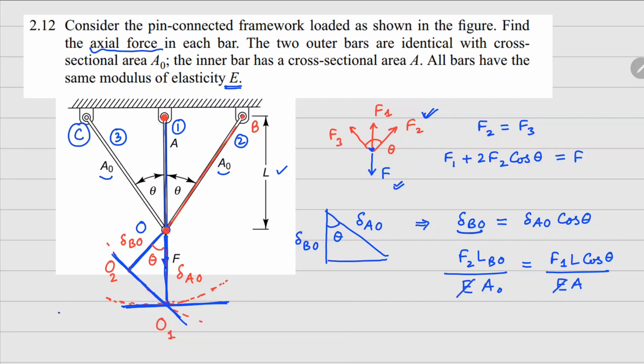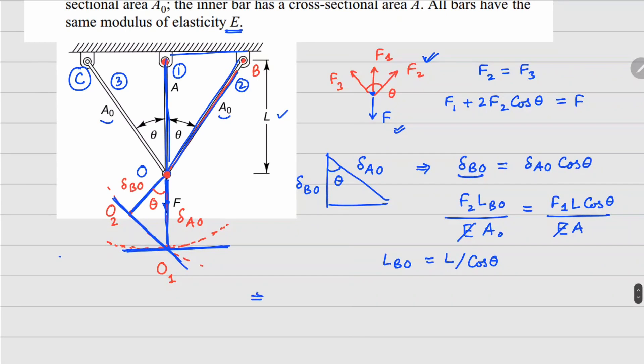This E and E will cancel out. Now this LBO, based on this triangle, can be written as L divided by cos theta. So now if I substitute this, you can see that your F2 is equal to F1 times A0 divided by A, and there will be two cos theta combining, so there is a cos squared theta there.